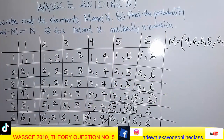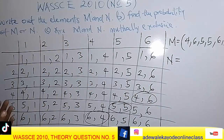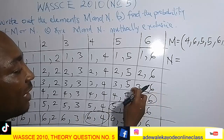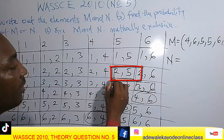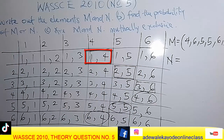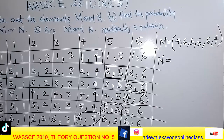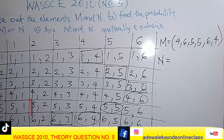Now let's move to set N — the difference between the two numbers must be 3. Looking through the values: the difference between 3 and 6 is 3; between 2 and 5 is 3; between 4 and 1 is 3; between 1 and 4 is 3; between 6 and 3 is 3; between 5 and 2 is 3.